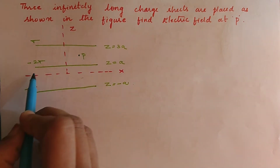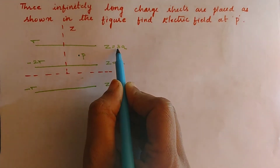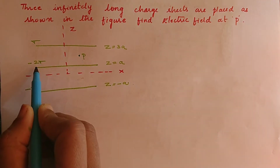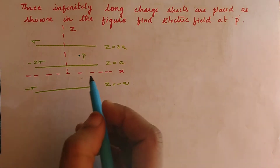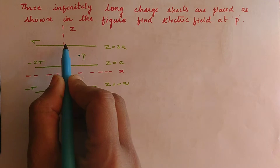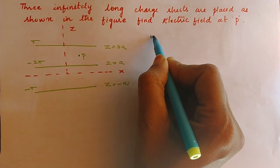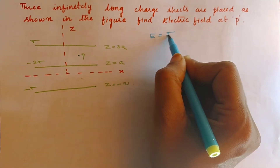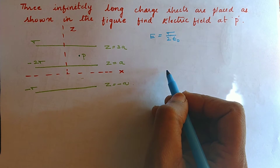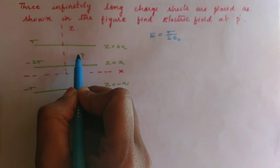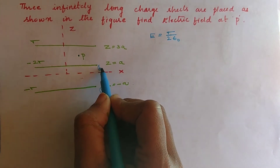The z and x axes are as per the question. The first plate at z = 3a has surface charge density sigma, the second has minus 2 sigma, and the third has minus sigma. We know that for an infinite plane sheet of charges, electric field is given by sigma by 2 epsilon naught. I will use this result and number the plates 1, 2, and 3.